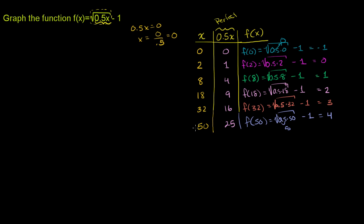We've taken some x values in our domain, and it's important to realize the domain is restricted — it is not all real numbers. For the principal root to be defined without imaginary numbers, what's underneath the radical must be non-negative. So 0.5x must be greater than or equal to 0, which means x must be greater than or equal to 0. The domain is all real numbers x greater than or equal to 0. We strategically picked points to get clean answers.